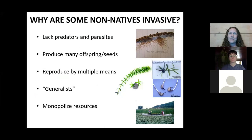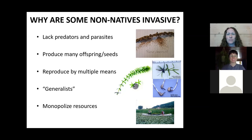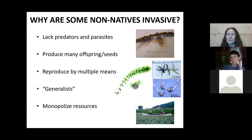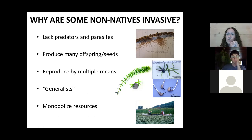Why are some non-natives invasive? One of the main reasons is that when a species is brought here from a different region, it's usually brought without its predators, parasites, or diseases that help keep the population in check. Also, they're often very good at reproducing or producing a lot of seeds. For example, hydrilla has four ways it can spread: fragmentation of the stem, tubers, seeds, and turions — little overwintering buds that can grow into new plants.